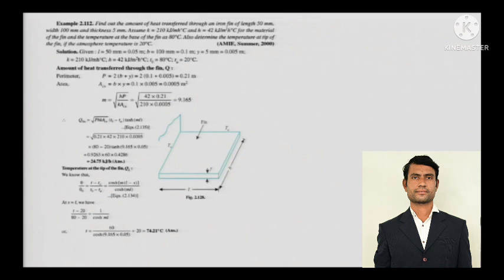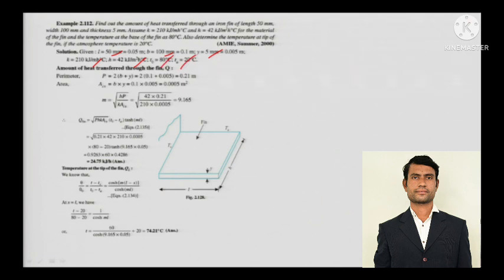The next numerical: find the amount of heat transferred through an iron fin of length 50 mm, width 100 mm, and thickness 5 mm. Assume the given values of k and h. The base temperature is 80°C and the atmosphere temperature is 20°C. Also determine the temperature at the tip of the fin.